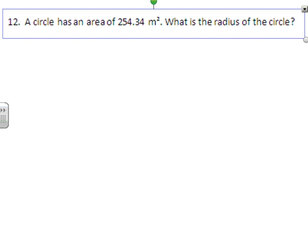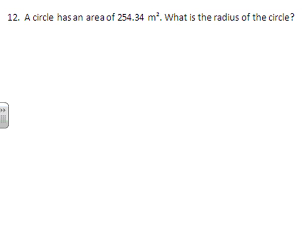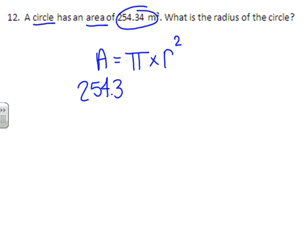Number 12, a circle has an area of 254.34 square meters. What is the radius? Circle area. Our formula is pi times radius squared. We know the circle area is 254.34, so we're going to substitute that in. We know the value of pi is 3.14, and we are looking for the radius, so that stays r.